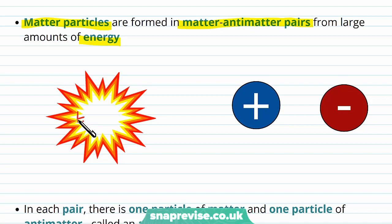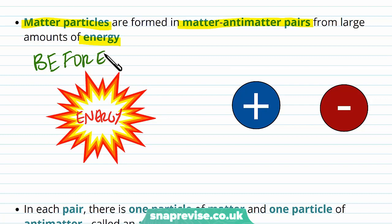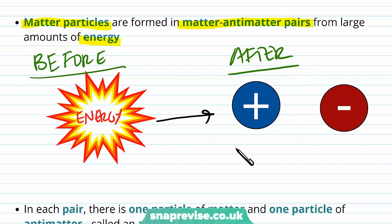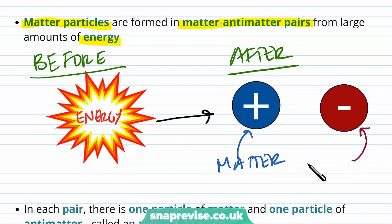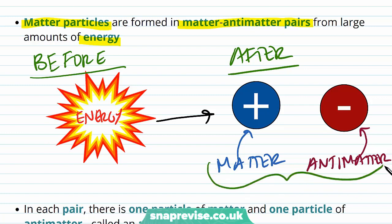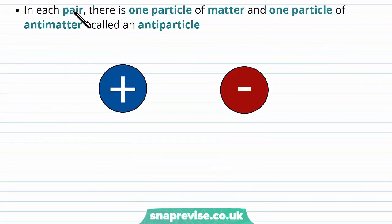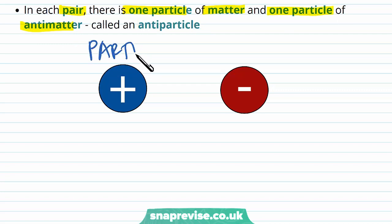Matter particles are formed in matter-antimatter pairs from large amounts of energy. Here we have some energy, and this large amount of energy can actually form a matter and anti-matter particle pair. Afterwards we can form two pairs — this particle makes up matter, so it's a matter particle, and this particle here is anti-matter. Even though one is matter and one is anti-matter, they're still both particles.